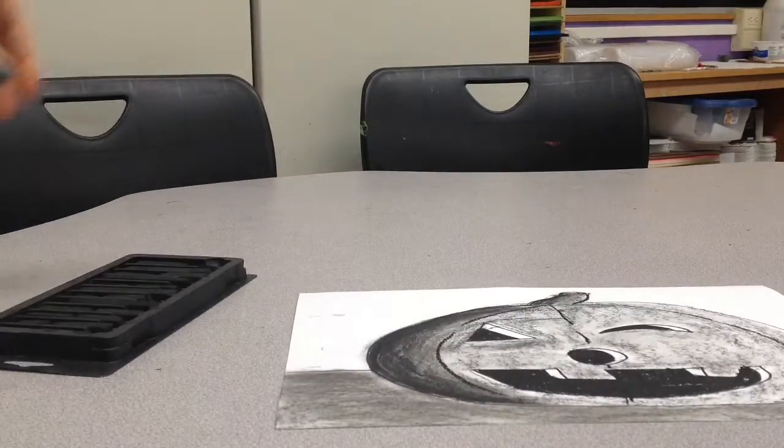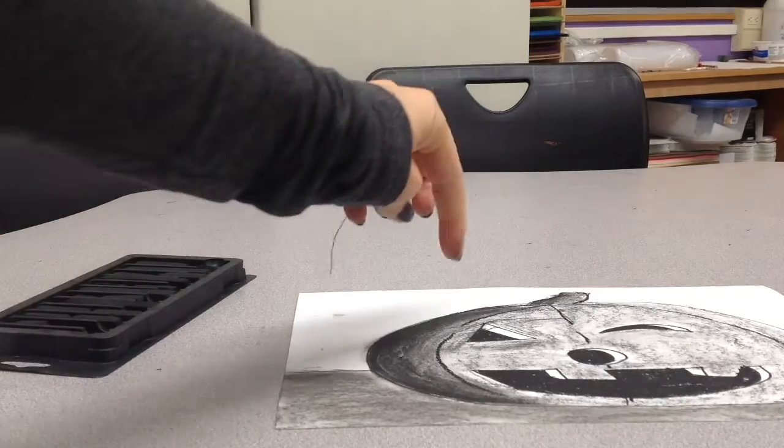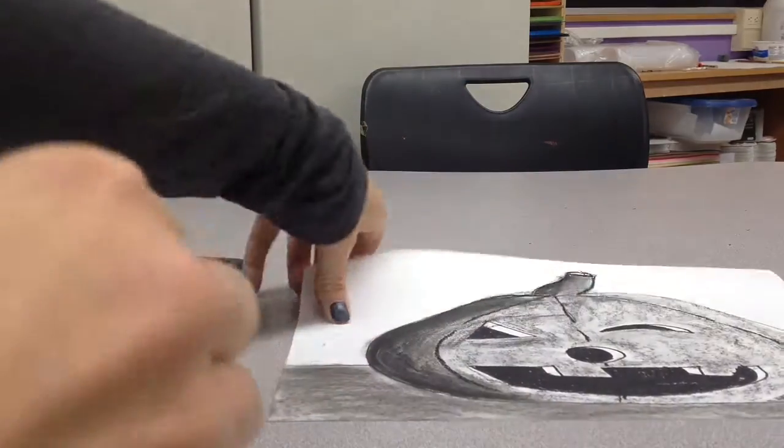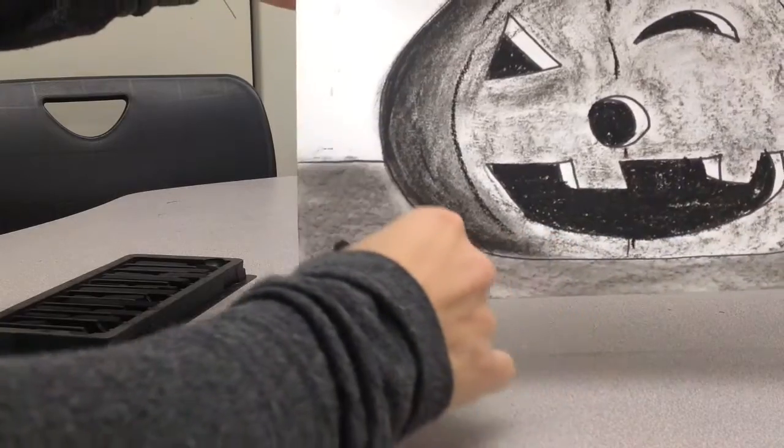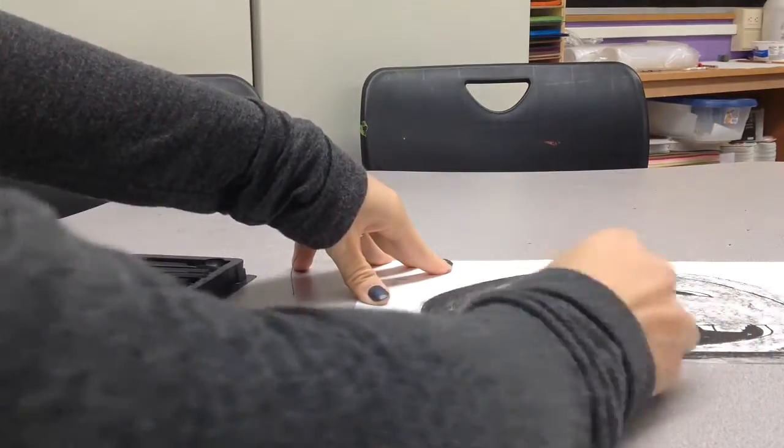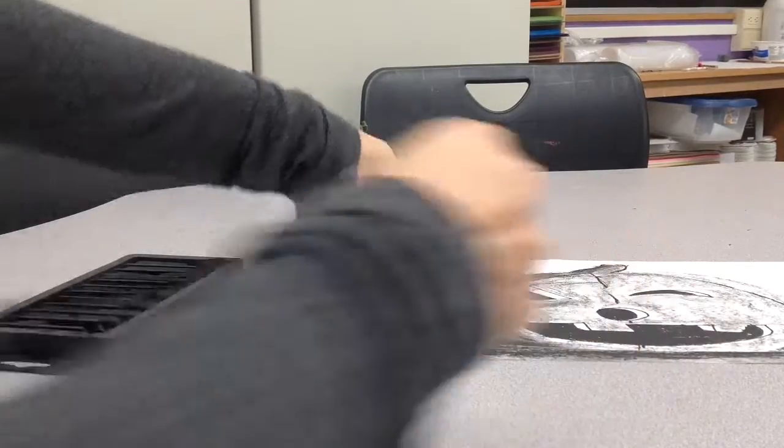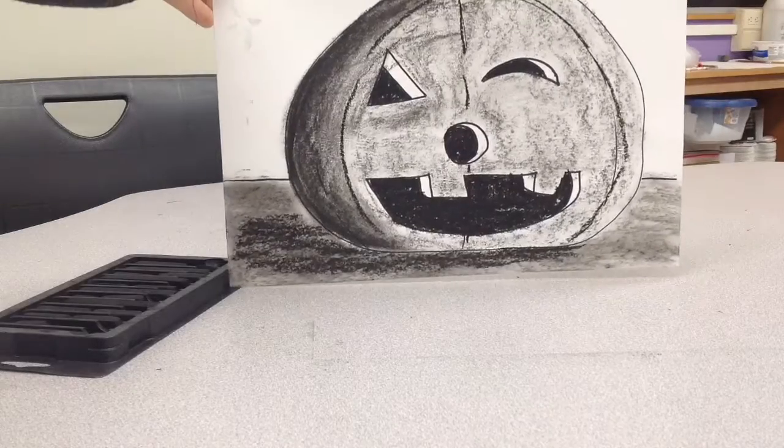Now, underneath, we're going to have a shadow for where our pumpkin is sitting. So since we did the left side of our pumpkin before, we have to do the left side shadow on the bottom of the ground. So basically, I'm going to be coming right underneath the pumpkin and then a little bit out in a circular motion. So I'm tipping it on my side and I'm just making a shadow so that it looks like it's sitting on the table, like that.